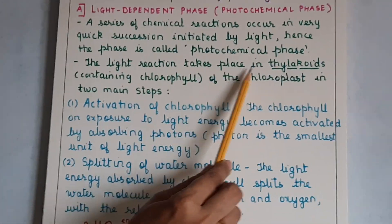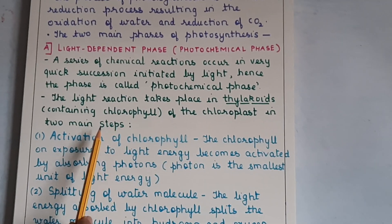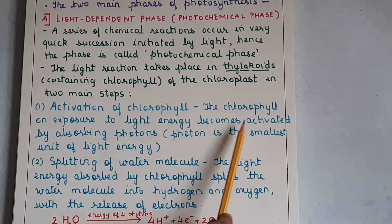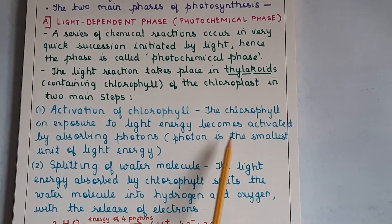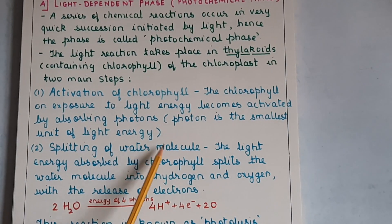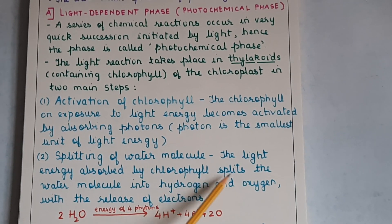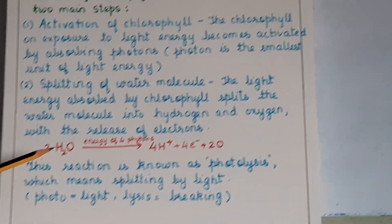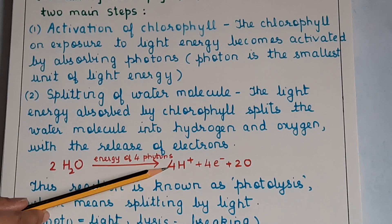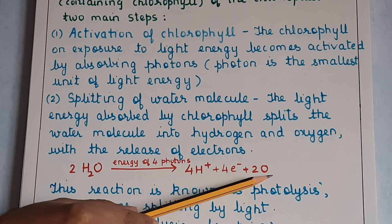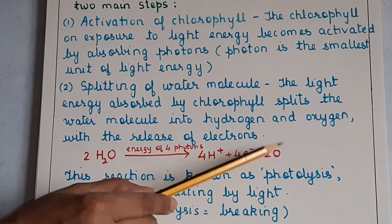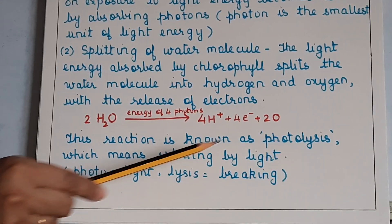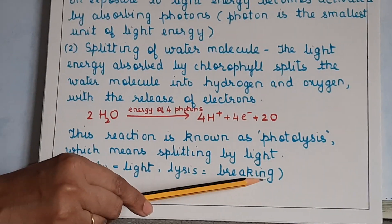The light reaction takes place in the thylakoids containing chlorophyll of the chloroplast. The equation for photolysis: 2H2O + energy of 4 photons → 4H⁺ + 4e⁻ + 2O. Note: this is 2 atoms of oxygen, not 20. This reaction is known as photolysis — photo means light, lysis means breaking.